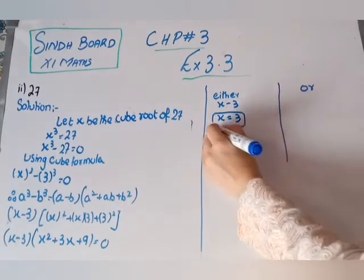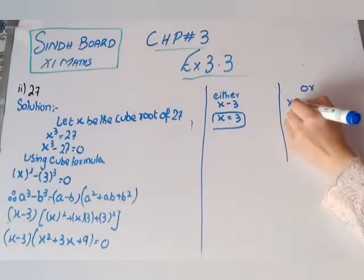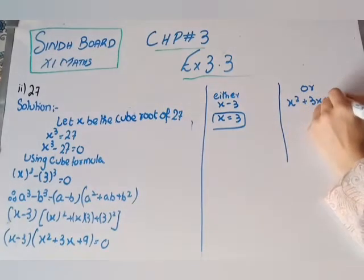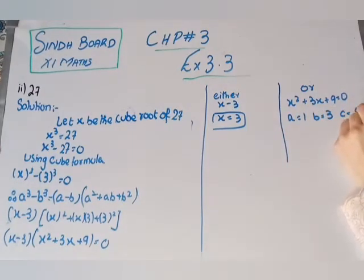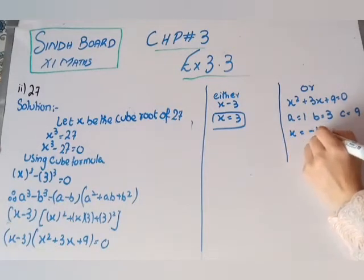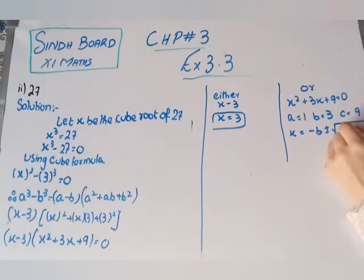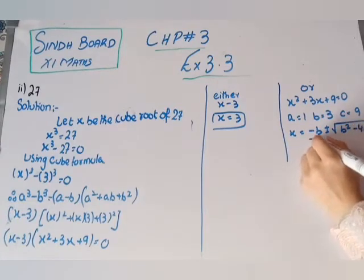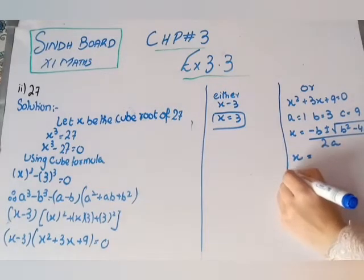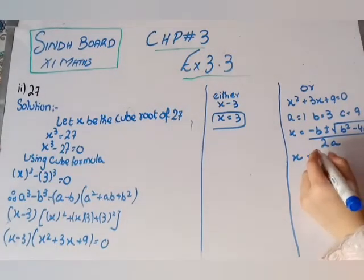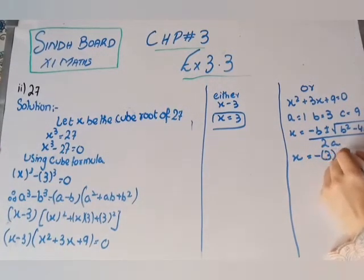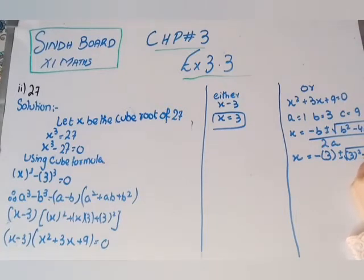From x minus 3 equals to zero we get x equals to 3. Then we solve the quadratic x squared plus 3x plus 9 using the quadratic formula: x equals to (minus 3 plus or minus under root of 3 squared minus 4 times 1 times 9) upon 2 times 1.